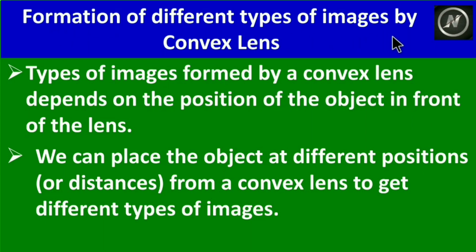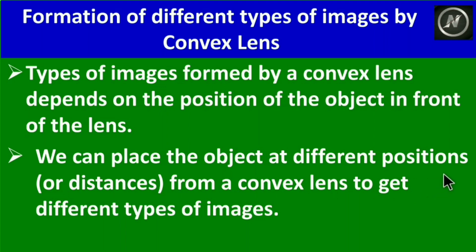Now, formation of different types of images by a convex lens. The type of image formed by a convex lens depends on the position of the object in front of the lens. We can place the object at different positions to get different types of images. Let us see how the image forms and what are its characteristics.